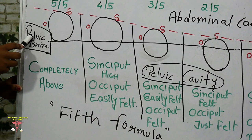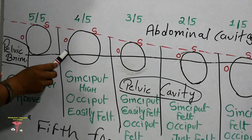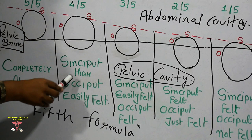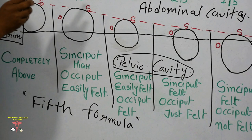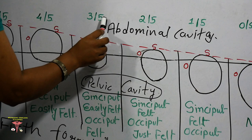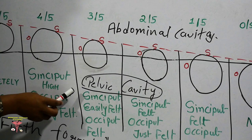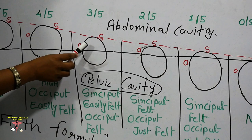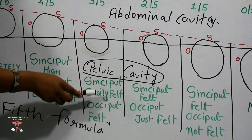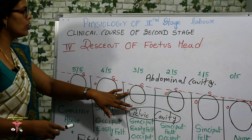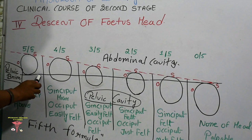Moving to 4/5, the sinciput is high and the occiput can be easily felt. At 3/5, the sinciput can still be easily felt and the occiput can also be felt. In both 4/5 and 3/5, both the sinciput and occiput structures remain above the pelvic brim.